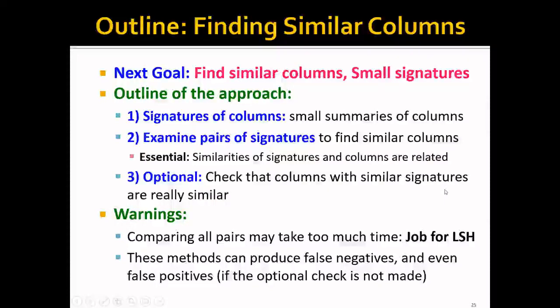To write that down more clearly, the outline of our approach would be to first obtain the signatures of the columns, that's the small summaries of the columns, and then we'll examine pairs of signatures to find the similar columns. And one essential thing is that the similarities of the signatures and the similarities of the columns should be related. And this is actually the key of minhashing. And optionally, you can also check to confirm that the columns with similar signatures are really similar.